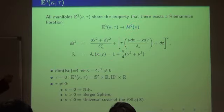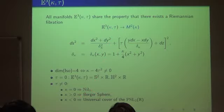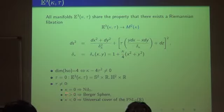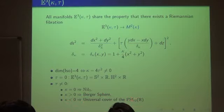The base can be taken as S², R², or H². When the base space is R², the space is called NIL-3, and its model is the Heisenberg group. When kappa is positive, it's called the Berger sphere and its model is SU(2). When kappa is negative and the manifold is simply connected, one can take the universal cover.